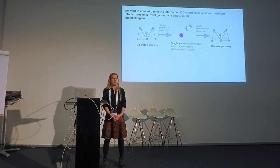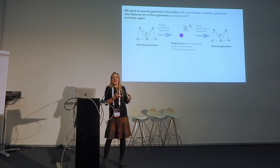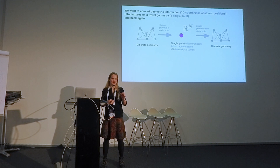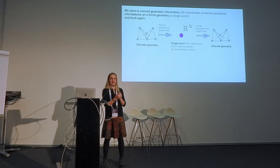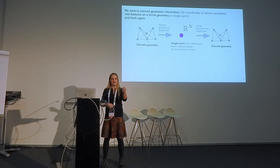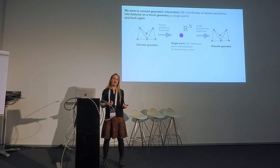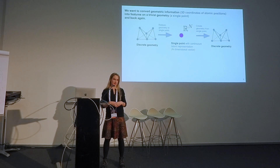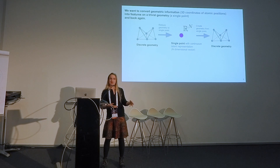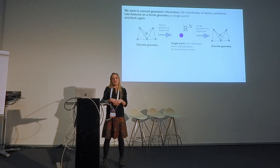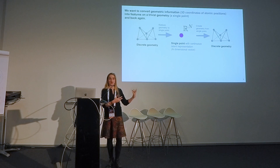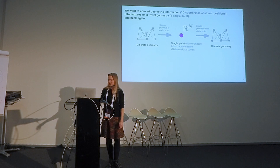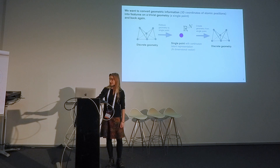What I want is to convert geometric information — 3D coordinates of atomic positions — into features on a trivial geometry, in this case a point. I want to eat away the geometry, convert it into features, and have that encoding be sufficiently robust that I can bloom it back out into the original geometry and back again. The intermediate representations could be quite useful, and I can do interesting mathematical operations on the latent space, as in autoencoder-type architectures.